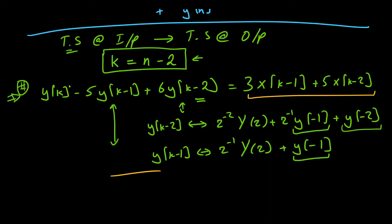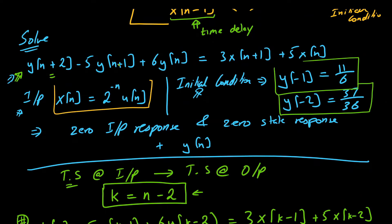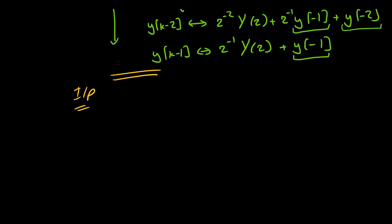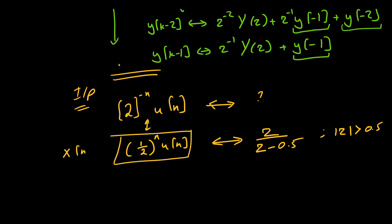For the input side, we are given X of N equals 2 raised to the power minus N times U of N. We rewrite this as (1/2) raised to the power N times U of N. Its Z-transform is straightforwardly Z over Z minus 1/2, or equivalently Z over Z minus 0.5, with the region of convergence: absolute value of Z greater than 0.5.